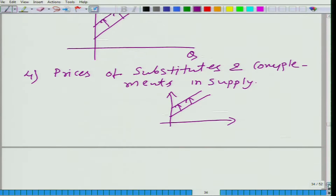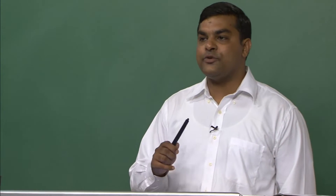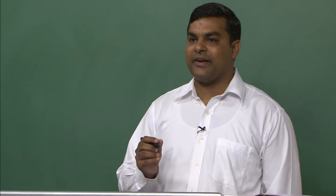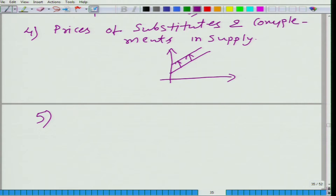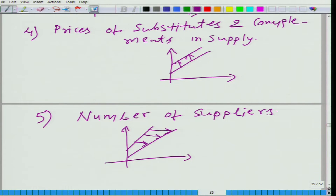All these factors affect not only market supply but also individual supply. Now I am going to talk about a factor that affects only market supply and not individual supply — that is the number of suppliers. If the number of suppliers goes up, market supply will go up.